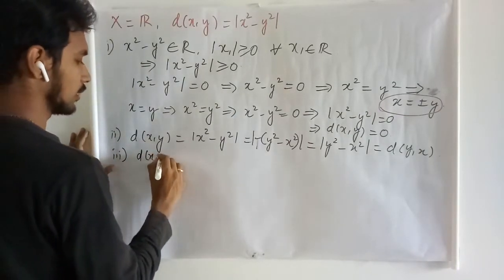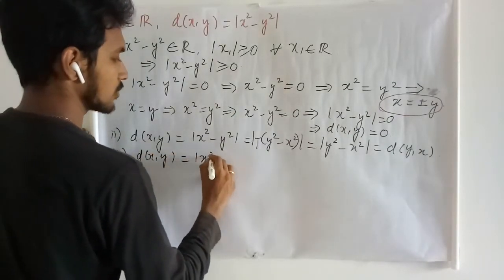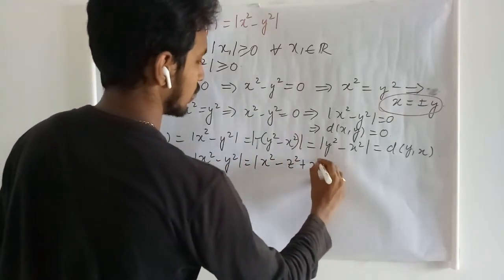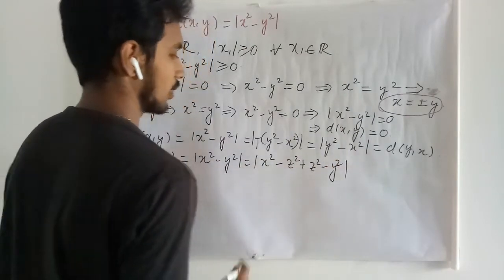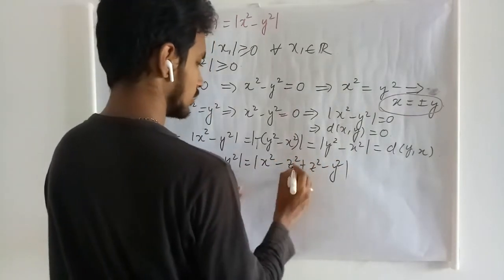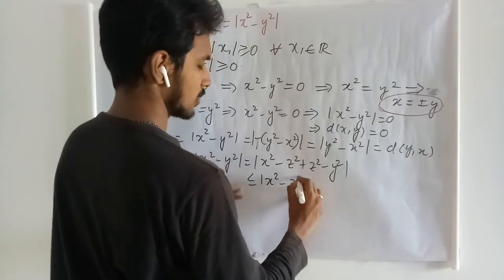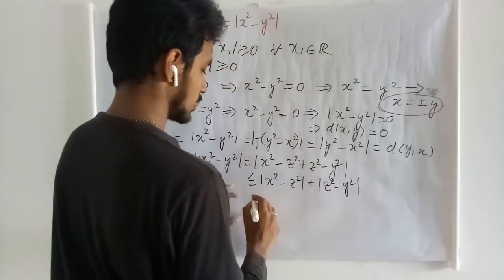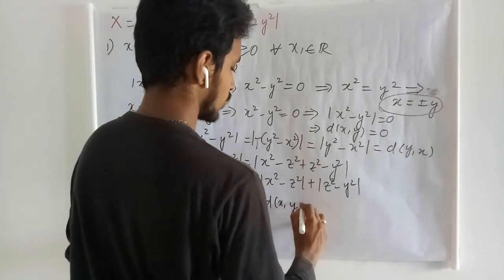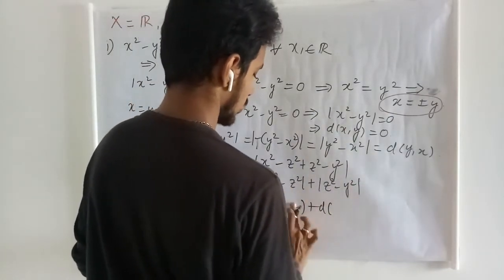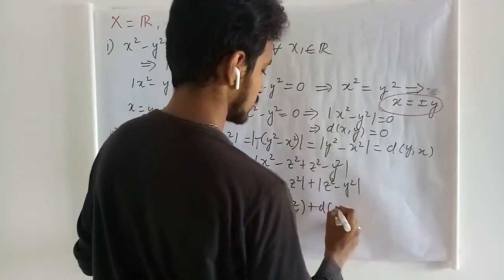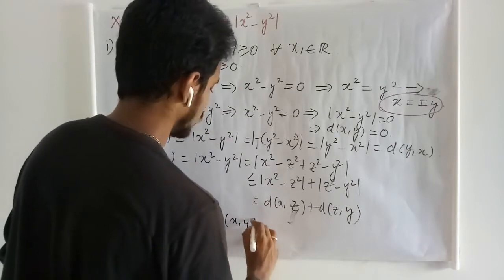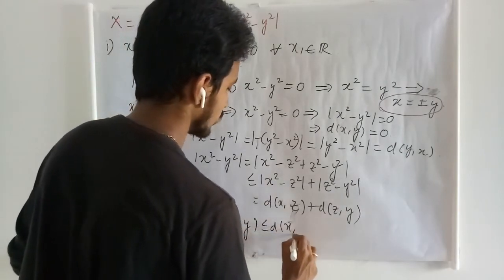Let us go to the third one, that is triangle inequality. x squared minus y squared: without affecting the values, adding and separating z squared, this is going to split this into absolute of x squared minus z squared plus absolute of z squared minus y squared, and this is d of x, z plus d of z, y. This proves the triangle inequality of this function.